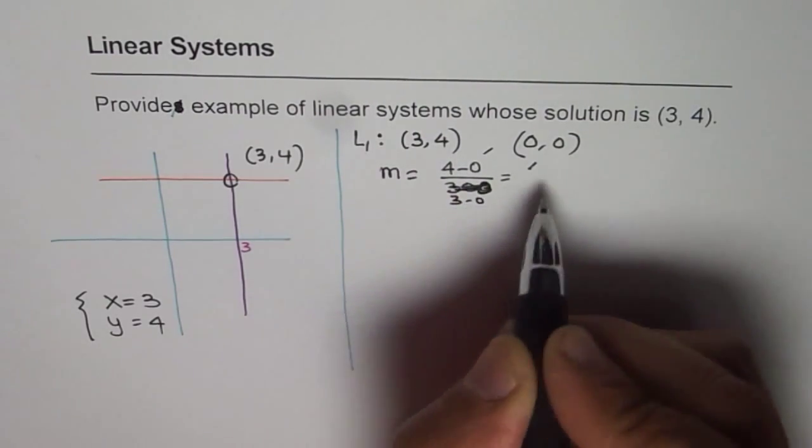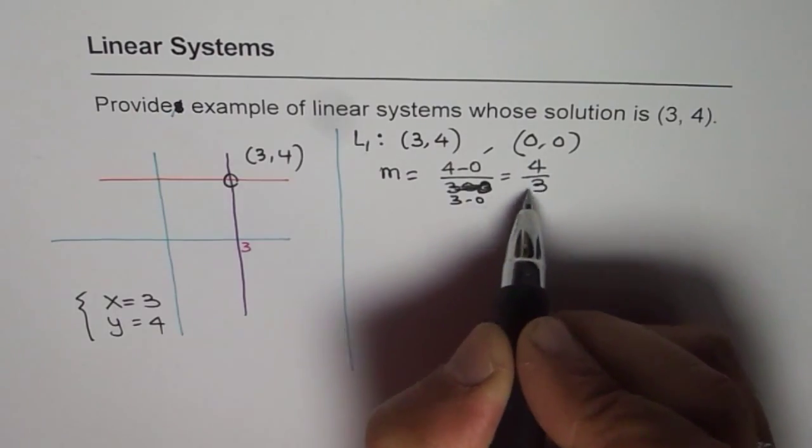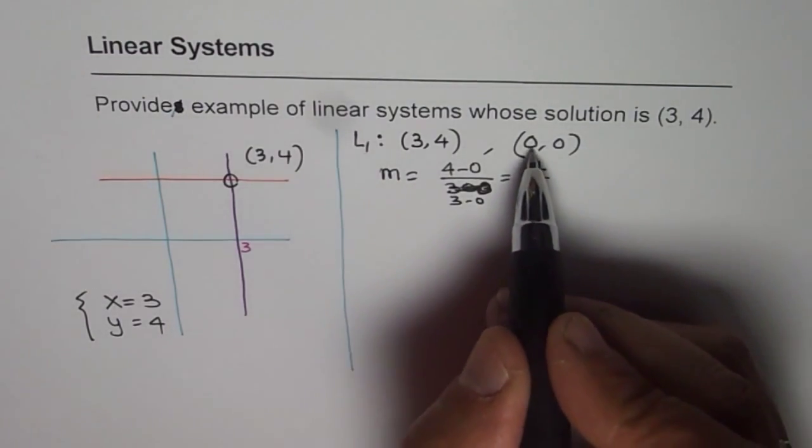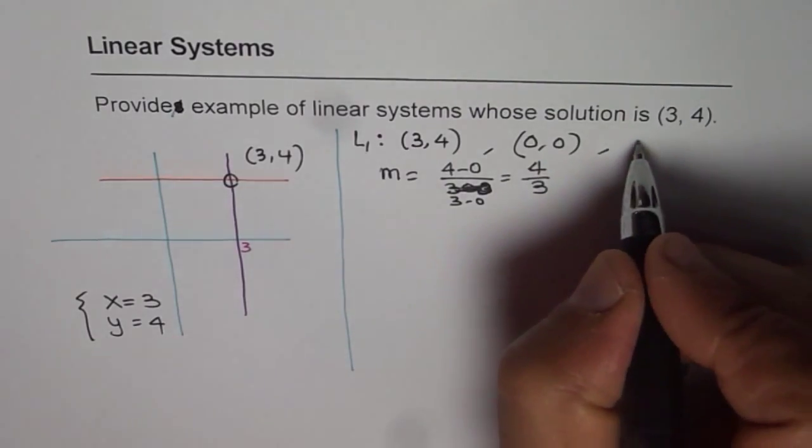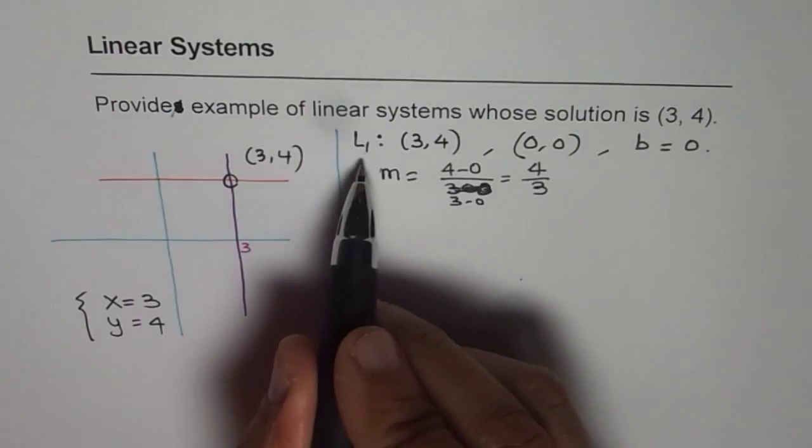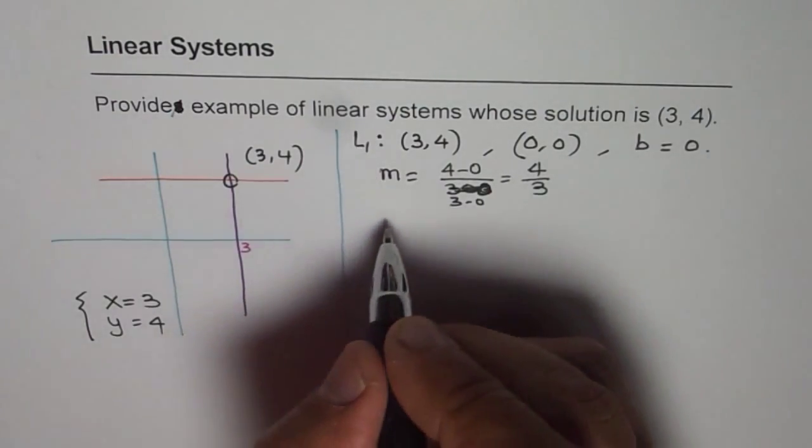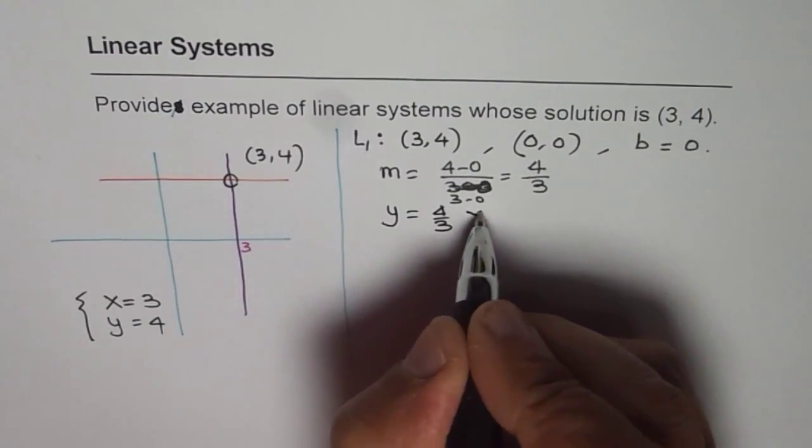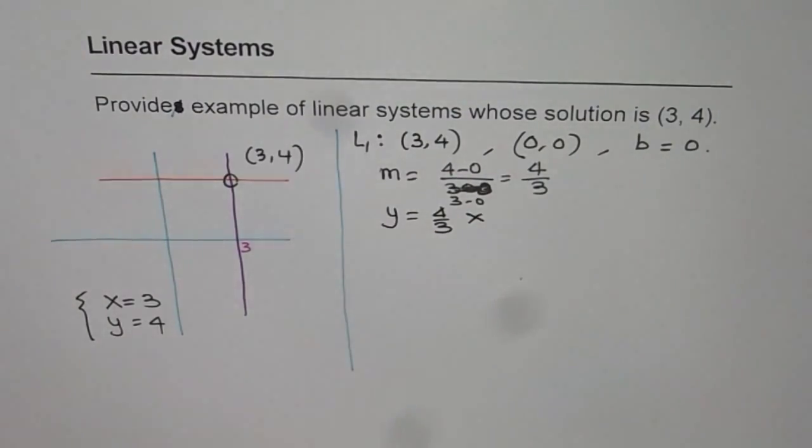which is 4 over 3. So that is the slope. And y-intercept is, in this case, 0. So we have y-intercept, which is b, is 0. And therefore, we can write down the equation of this line as y equals to 4 over 3x plus 0. So that becomes the line.